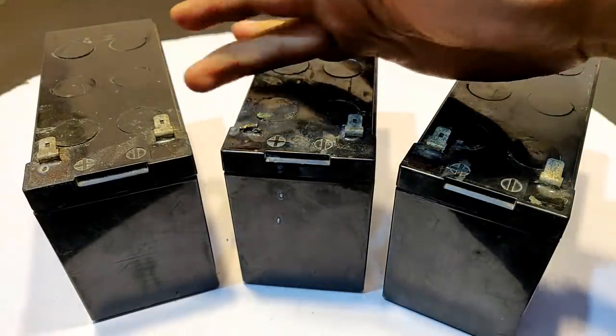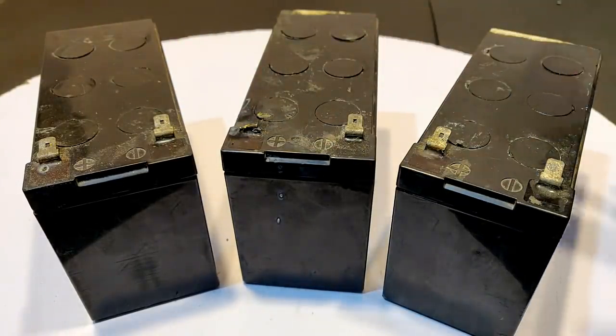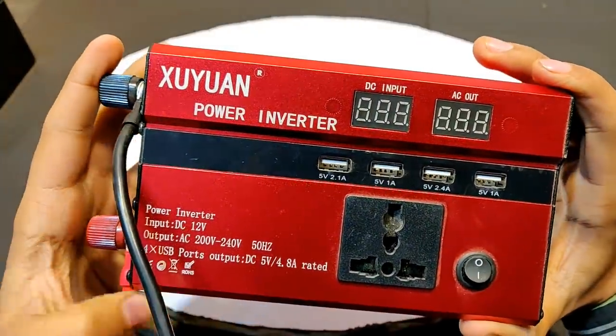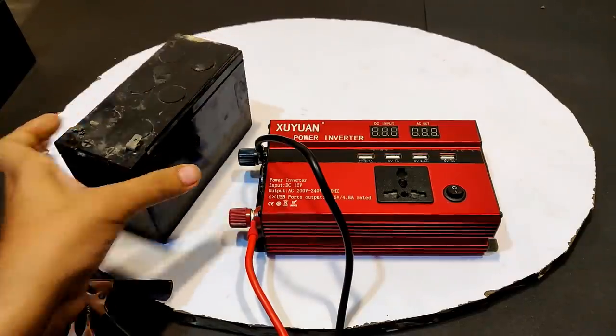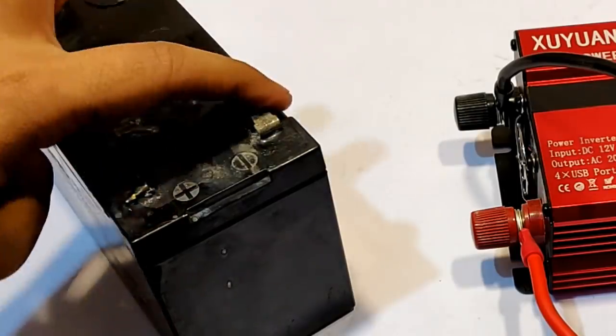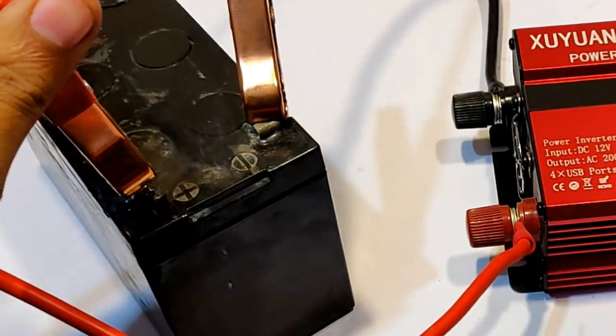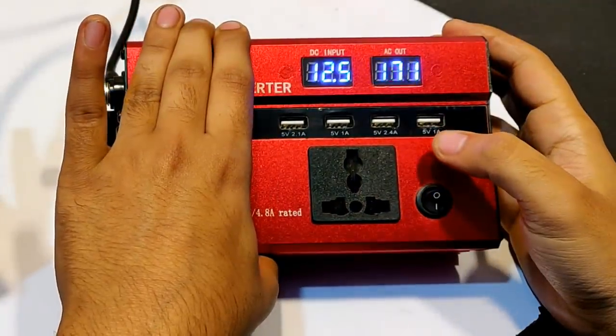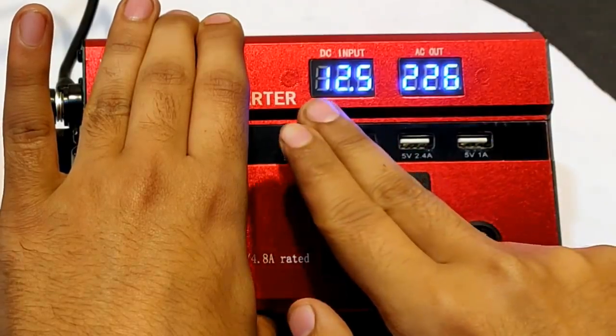Hi guys, here what you see are three really old UPS batteries, and this is a 12 volts to 220 volts solar power inverter. Connecting positive to positive and negative to negative, turning it on, here you see battery voltage.